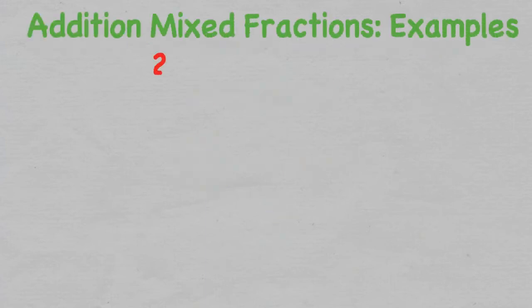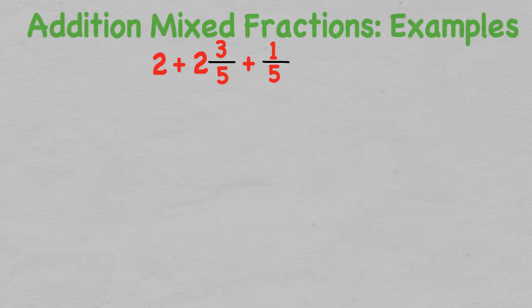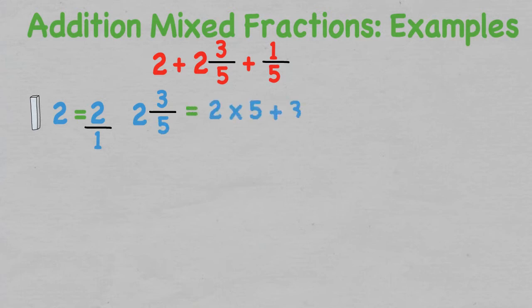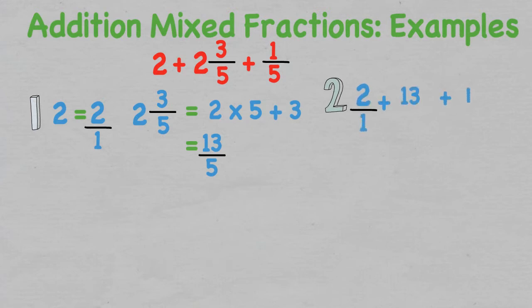Now that we've had a quick refresher, let's look at some examples. If we have 2 plus 2 and 3 over 5 plus 1 over 5, we need to first change the whole number 2 into an improper fraction — any whole number is simply over 1. We then change the mixed fraction into an improper fraction: multiply 2 by the denominator 5 and add the numerator 3, which leaves us with 13 over 5. The fractions are not alike as the denominators are different, so we need to find the lowest common denominator.